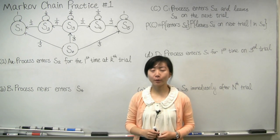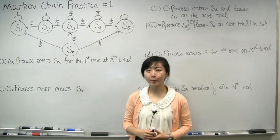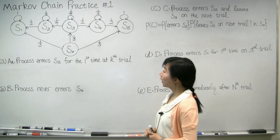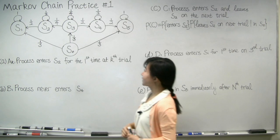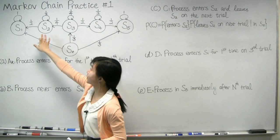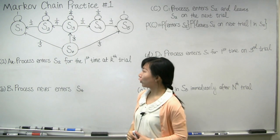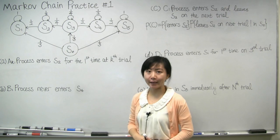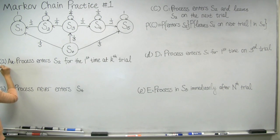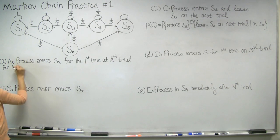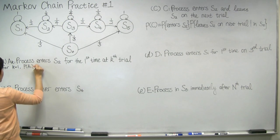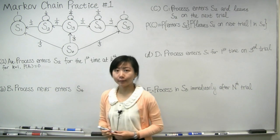For part A of the problem, we have to calculate the probability that the process enters S2 for the first time at the kth trial. First, notice that it will take at least two trials for the process to make a transition from S0 to S2. Therefore, for k equal to 1, the probability of A1 is simply equal to 0.